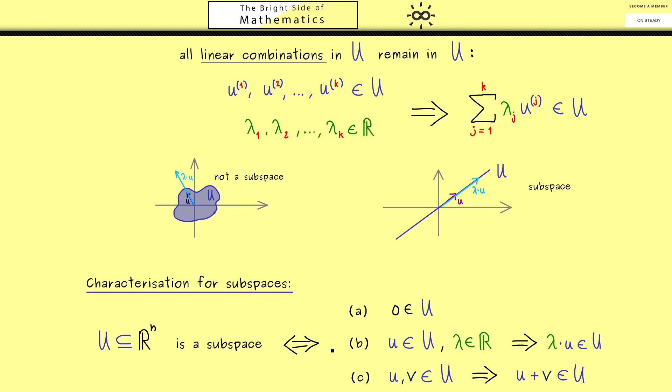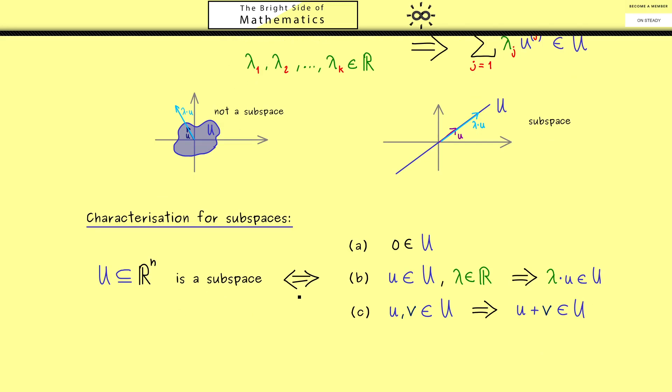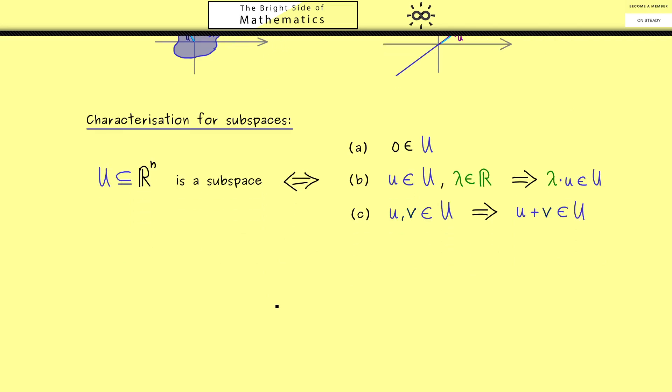So this is what you really should remember. This is how you can characterize a subspace. Indeed the proof using the definition from above is not hard at all. Essentially you just have to do a proof by induction. However, I don't want to show you this now because I think we first should look at examples.